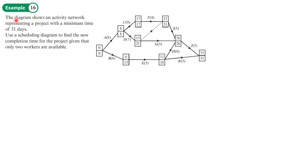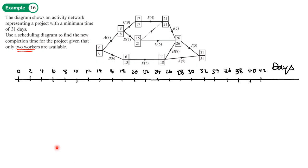Example 16: the diagram shows an activity network representing a project with a minimum time of 31 days. Using a scheduling diagram, find a new completion time for the project given that only two workers are available. I'll draw my scale along the top here. I know I'm going to be going beyond 31 days. I don't know how much longer.